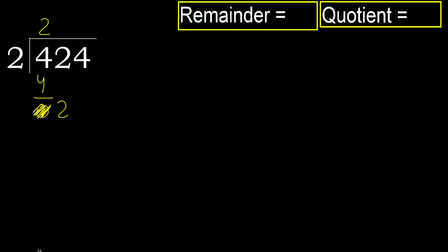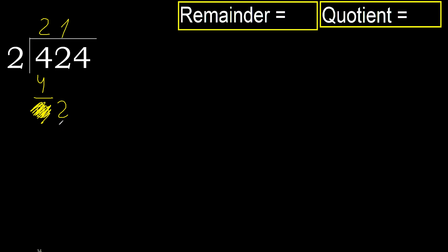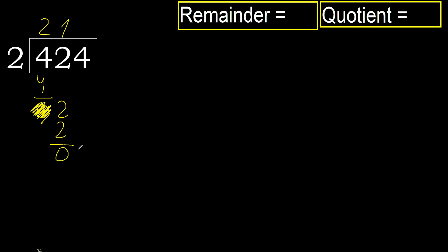Eliminate. Bring down 2. 2 multiplied by 1 equals 2, is not greater, subtract: 2 minus 2 equals 0. Next, eliminate.